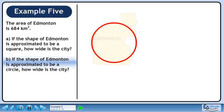Now we'll move on to Part B. If the shape of Edmonton is approximated to be a circle, how wide is the city?